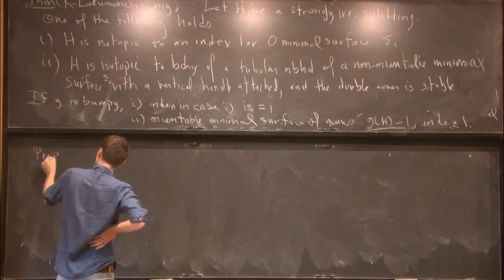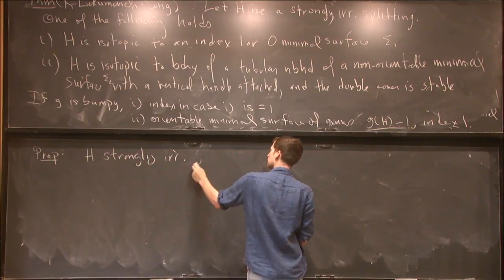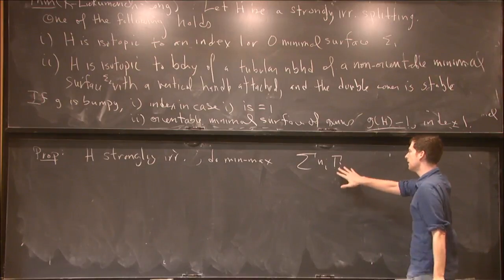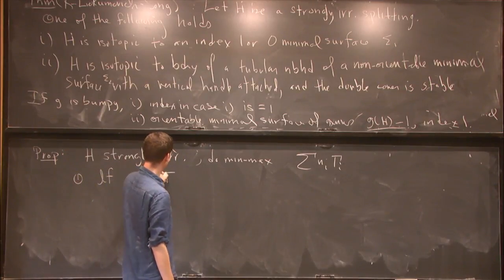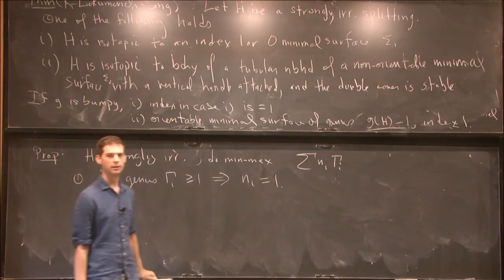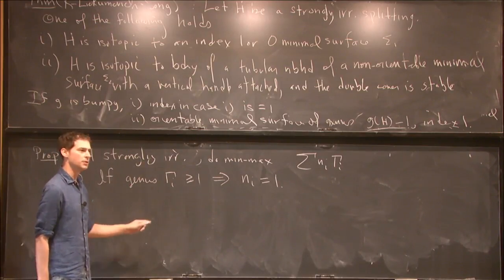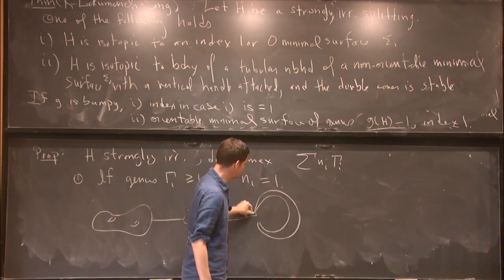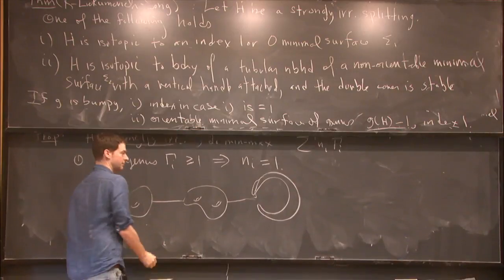Strong irreducibility plays a crucial role in the following proposition: if H is a strongly irreducible splitting and we do min-max obtaining a weighted sum of minimal surfaces, then if any surface γ_i has genus ≥ 1, its multiplicity n_i equals one. So anything orientable of positive genus appears with multiplicity one; you might still get spheres with multiplicity, but any genus piece is simple.